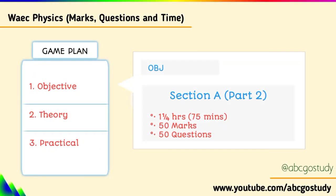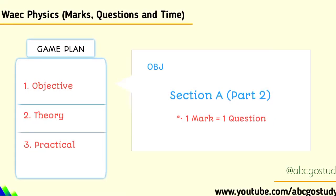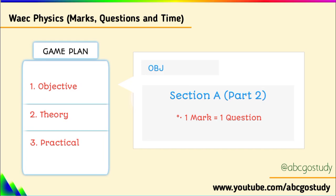Talking about this objective part, you have that as section A. The objective part has 1.25 hours — that's 75 minutes — for those questions, and you'll be given 50 marks. How many questions? 50 questions. Just know that you have one mark per question.